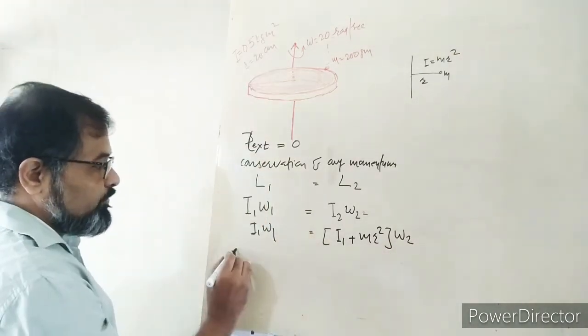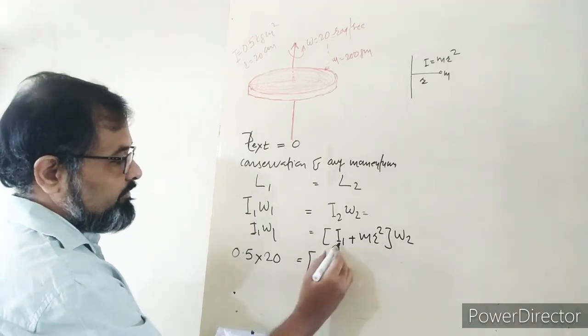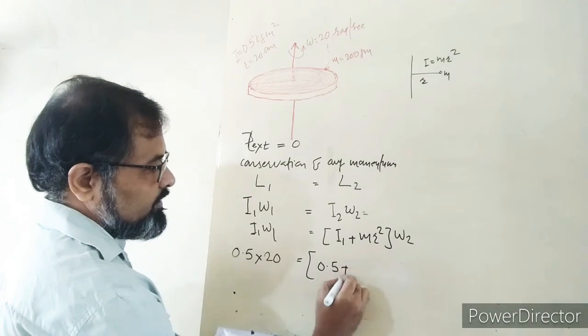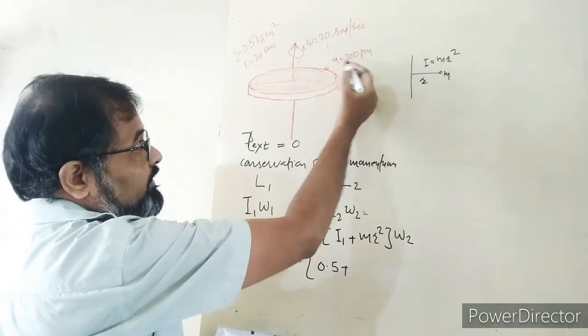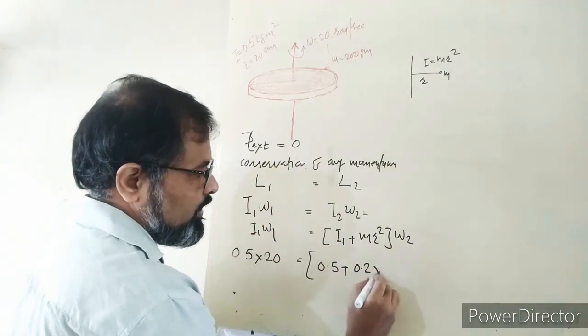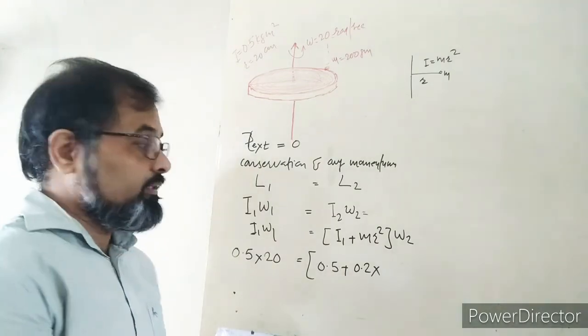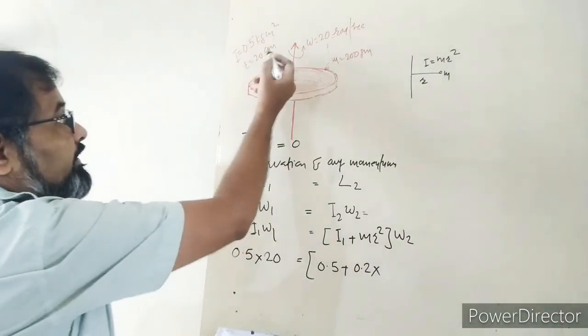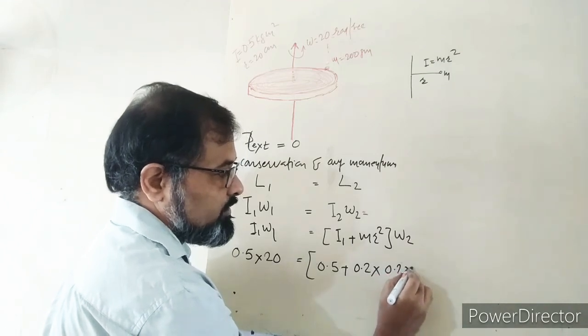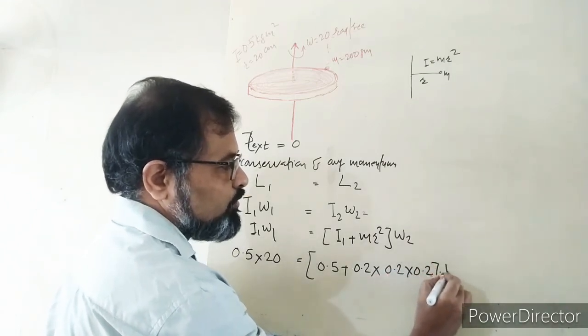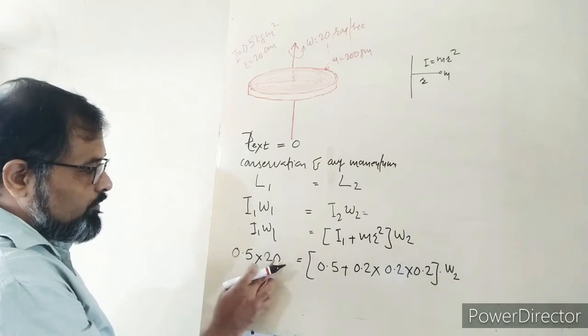Initially 0.5 times ω₁ which is 20 is equal to initially 0.5 plus now the 200 gram is 0.2 kg.